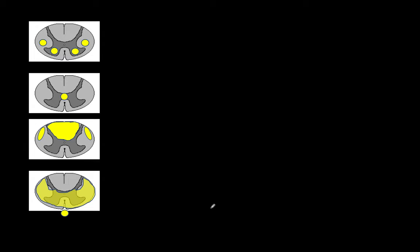Now we can talk about spinal cord lesions. These types of images will appear on your Step 2 — you need to be comfortable identifying which tracts are affected. In this particular image, which tracks are being affected — motor? The spinal thalamic is a little more lateral.